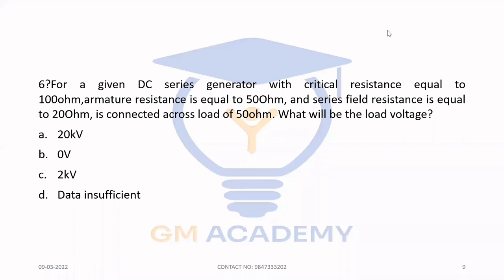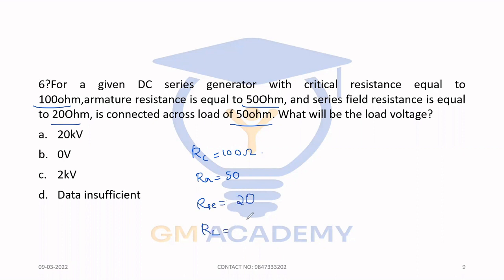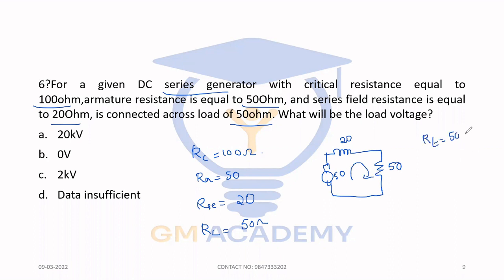Next question. For a given DC series generator, critical resistance RC = 100 ohm. Armature resistance Ra = 50 ohm, series field resistance = 20 ohm, and load resistance = 50 ohm. What will be the load voltage? Total circuit resistance = Ra + series field resistance + load resistance = 50 + 20 + 50 = 120 ohm.